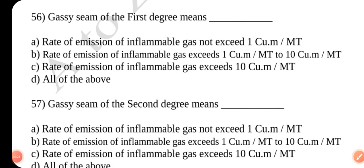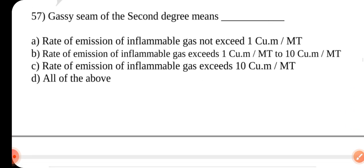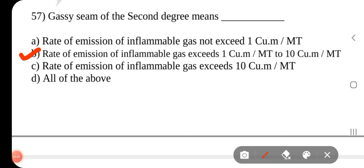Question number 56 and 57. Question number 57. A. Rate of emission of inflammable gas not exceeding one cubic meter per metric ton. Question number 57. Gassy seam of second degree means dash. Answer is B. Rate of emission of inflammable gas exceeding 1 m3 per metric ton to 10 m3 per metric ton.